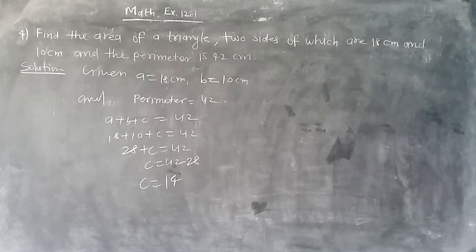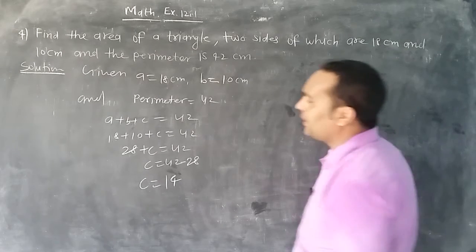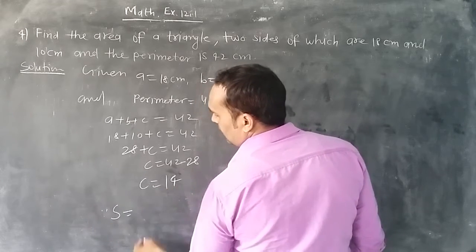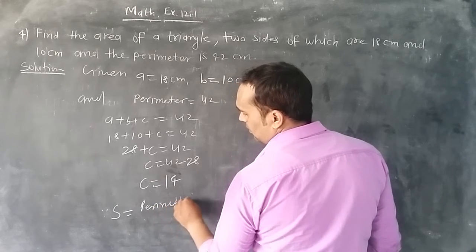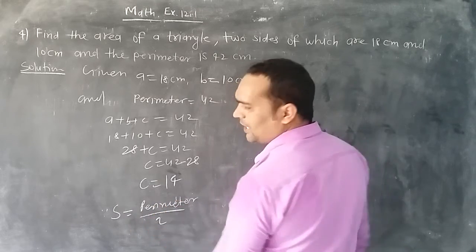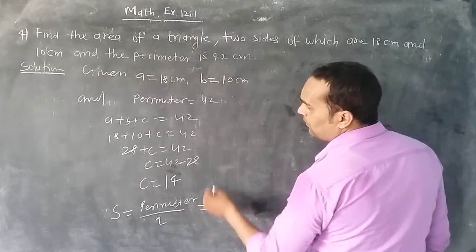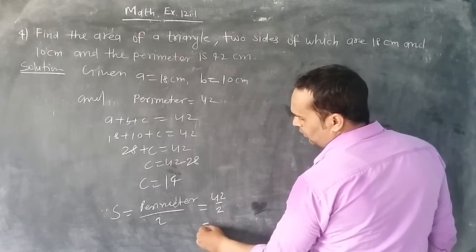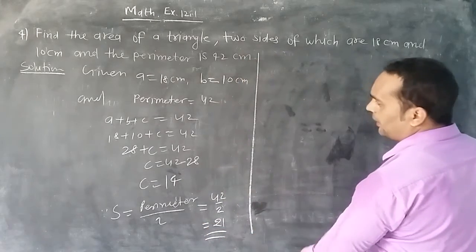Now we'll solve using Heron's formula to find the area of triangle. Since s equals perimeter/2, that is (a+b+c)/2. The perimeter is 42, so 42/2 equals 21. Now we'll find the area of triangle.